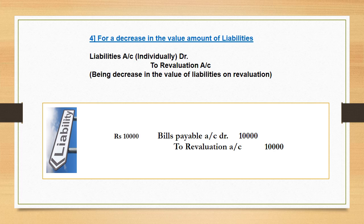Entry for decreasing the value of a liability: whenever there is a decrease in the value of a liability, it will increase profit. Therefore the entry is: Liabilities Account debit, to Revaluation Account. For example, there is a decrease in bills payable by rupees 10,000. Entry will be: Bills Payable Account debit, to Revaluation Account — because it is income for you and income is written on the credit side.